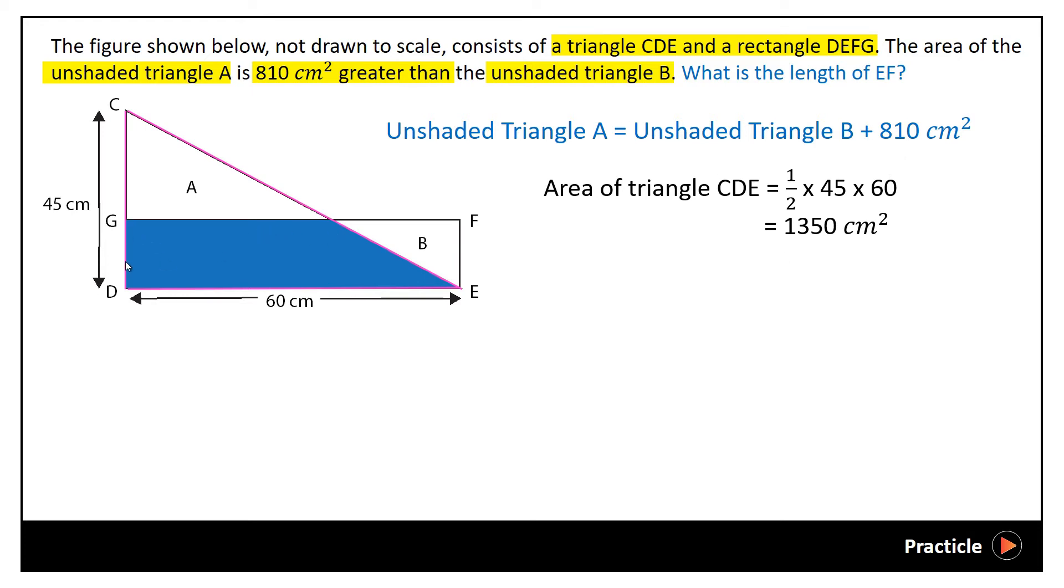If we were to include this shaded part over here, we realized that the area of the unshaded triangle A plus this shaded part would be equal to the area of the unshaded triangle B here, plus the shaded part here, plus 810. You realize what I have just done is actually just to replace this unshaded triangle A with this right portion over here.